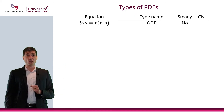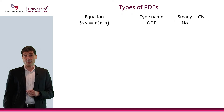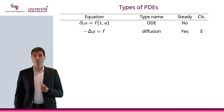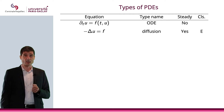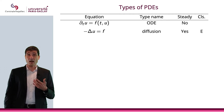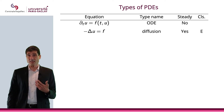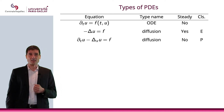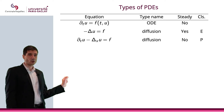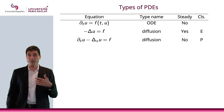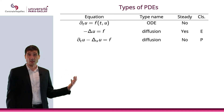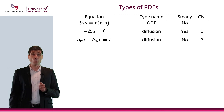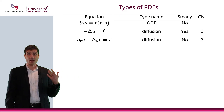If you look at minus Laplace u equals f — also called the diffusion equation, because that's often what it models — it is steady: time does not play a role, and the class is elliptic for the reasons we just explained. If you look at dₜu minus Δₓu equals f, where the subscript x emphasizes the derivative is with respect to space variables, the dimension d here would be 1 for time plus whatever dimension in space we have. That is a diffusion equation that is not steady, and the class is parabolic.